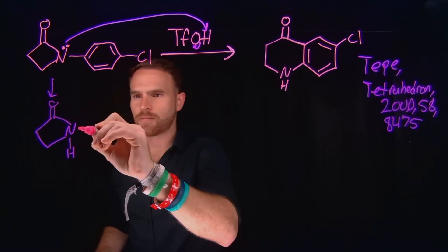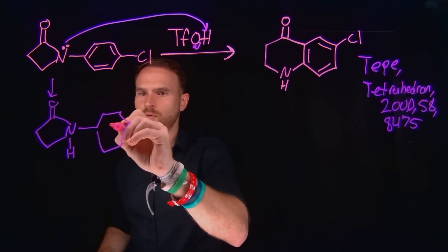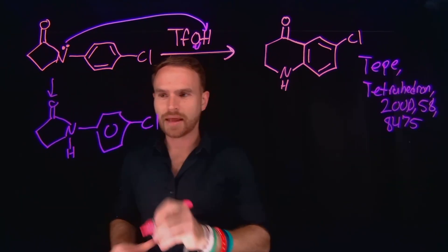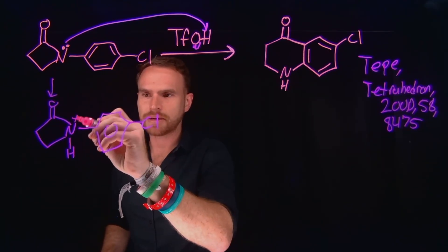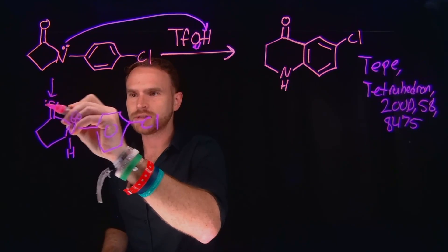The rest of our molecule still looks basically the same where you have this para-chlorobenzene. Now remember this nitrogen is going to be positively charged and that influences what happens next.